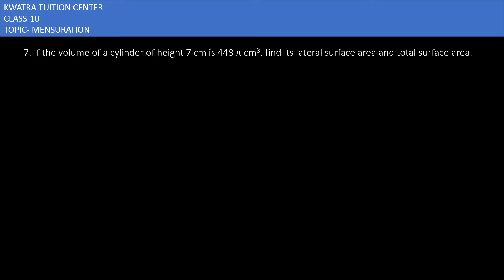So what you have mentioned is that volume is equivalent to 448π cm³, then height is equivalent to 7 cm. Now what is the volume of cylinder? It is equal to πr²h.